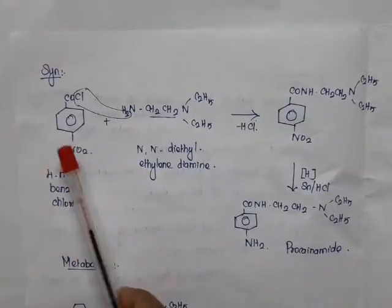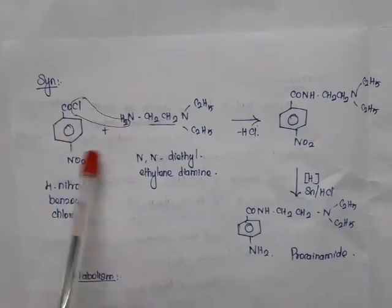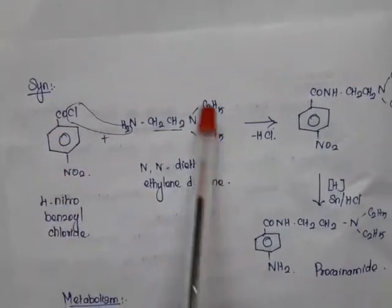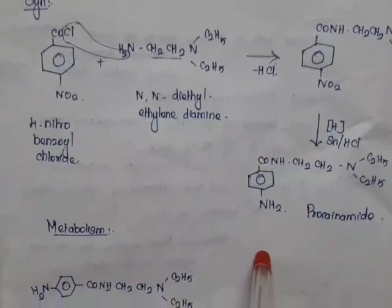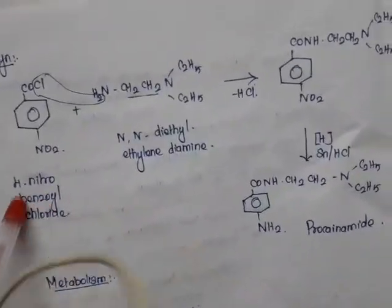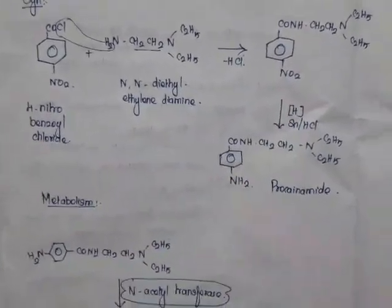For the synthesis of procainamide, 4-nitrobenzoyl chloride is taken and reacted with N,N-diethylethylenediamine. HCl is removed and the amine group attaches to the carbonyl, yielding the nitro intermediate. In the final step, the nitro group is reduced to an amino group to give procainamide.